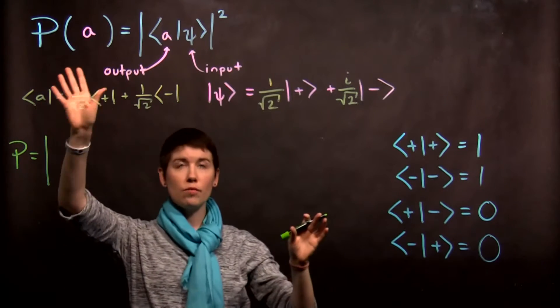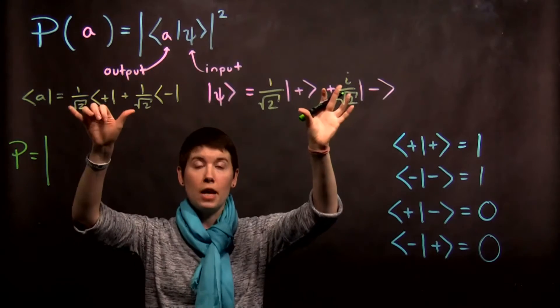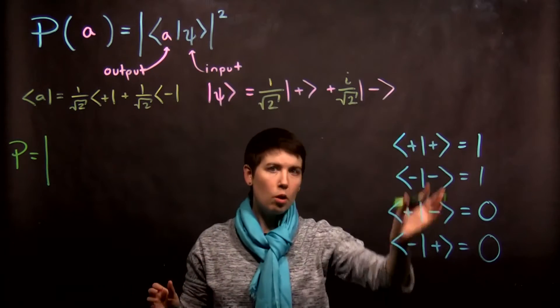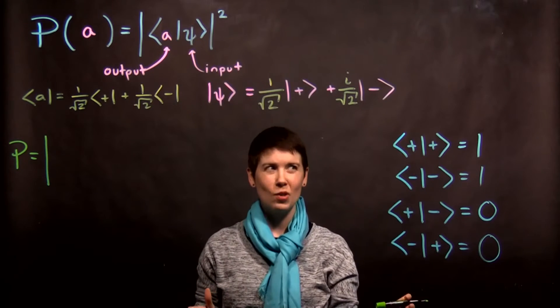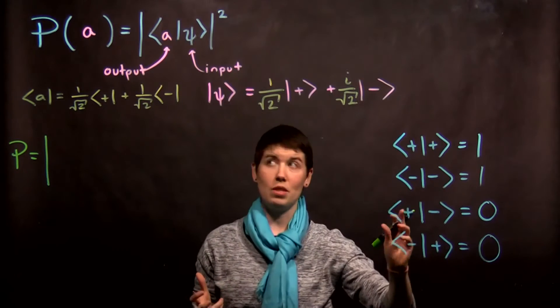And it's key that the basis of our bra and our ket match. So if this is all Z or this is all X or all Y, we can use these very simple relationships, but they must all be in the same basis.